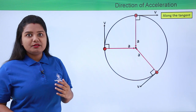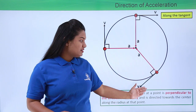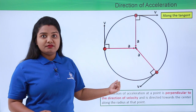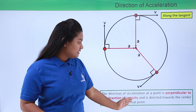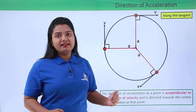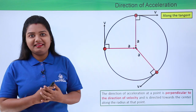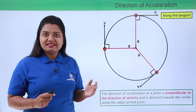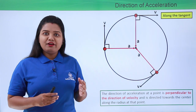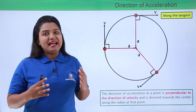As a concluding statement: the direction of acceleration at any point is perpendicular to the velocity and is directed along the radius towards the center of the circular path. With this we have reached the end of this video. I hope it was fully understandable. Thanks for watching.